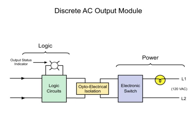For the AC output module, the circuit is comprised of a power section and logic section coupled by an isolation circuit, similar to the input module but in reverse order.